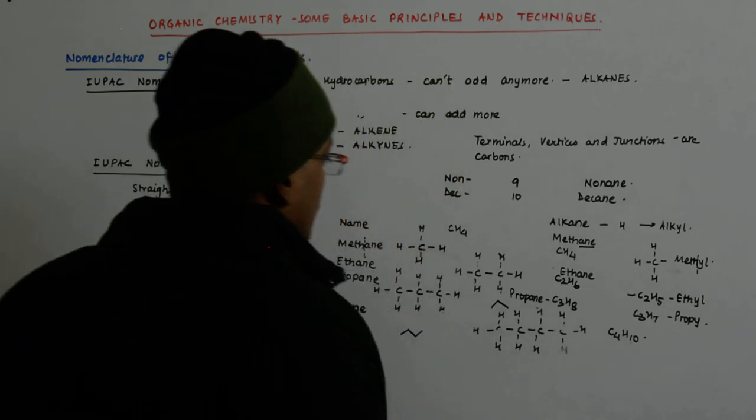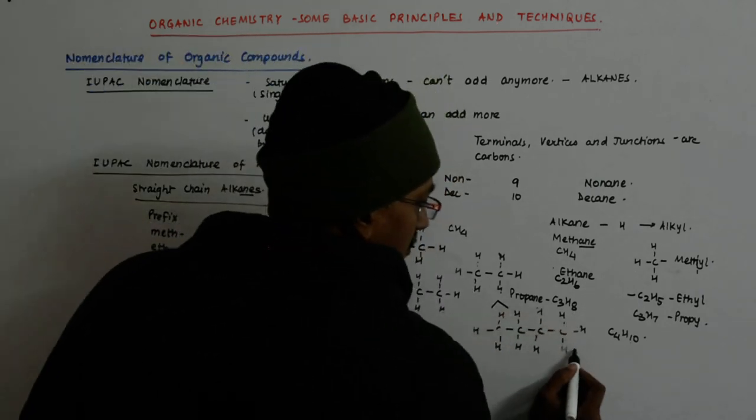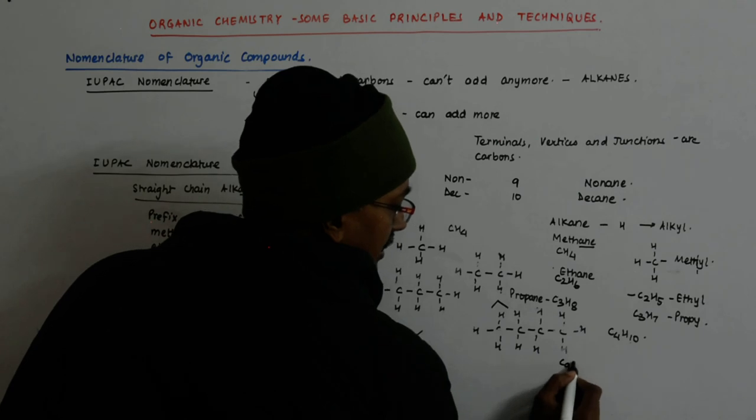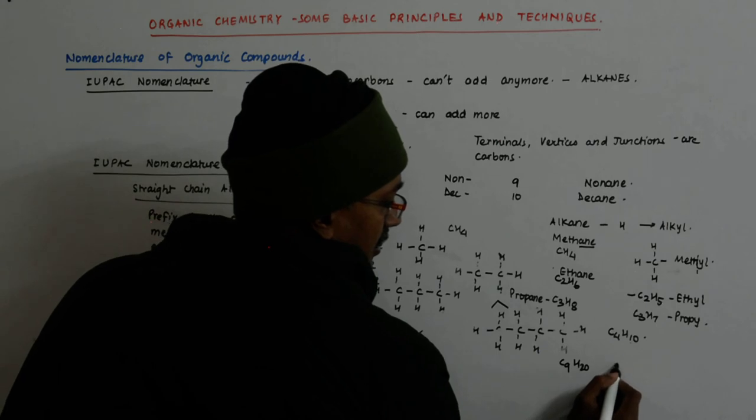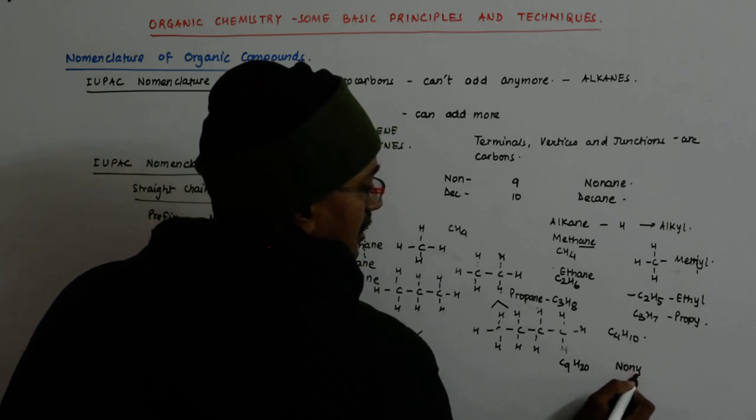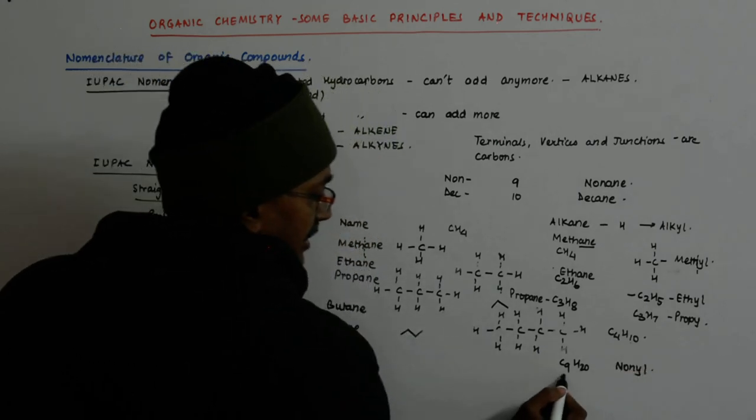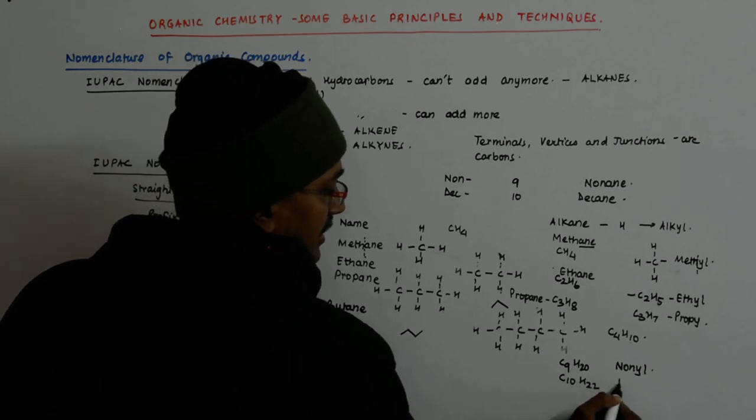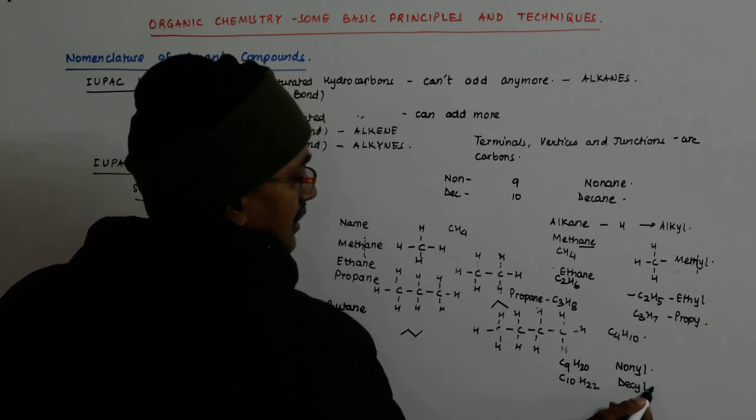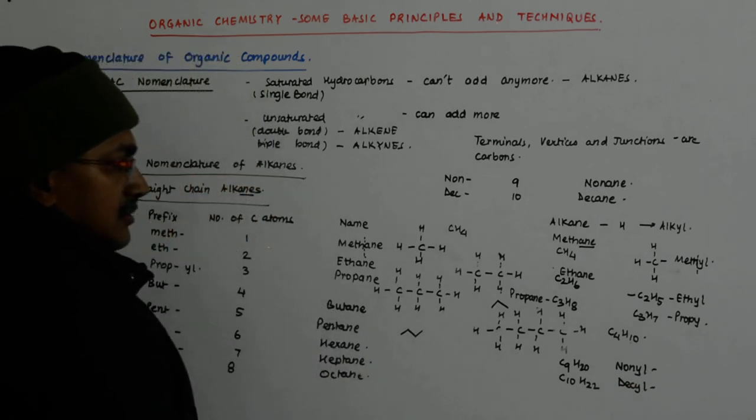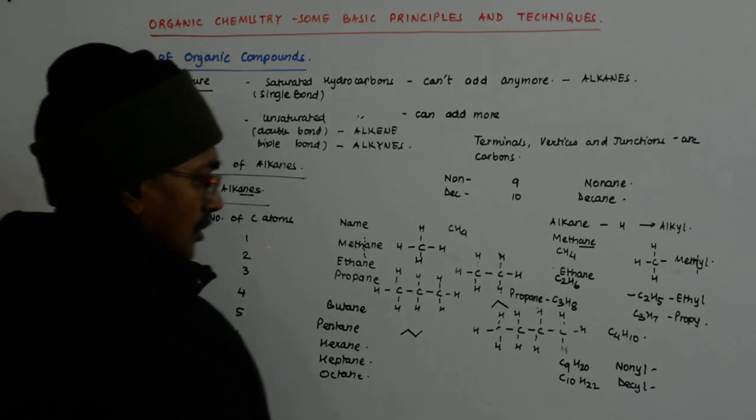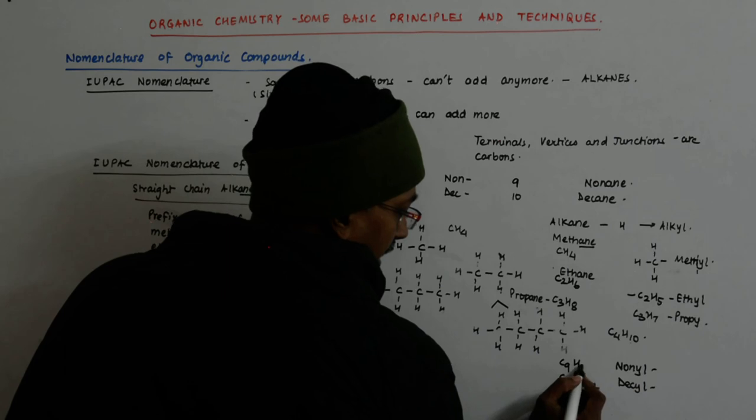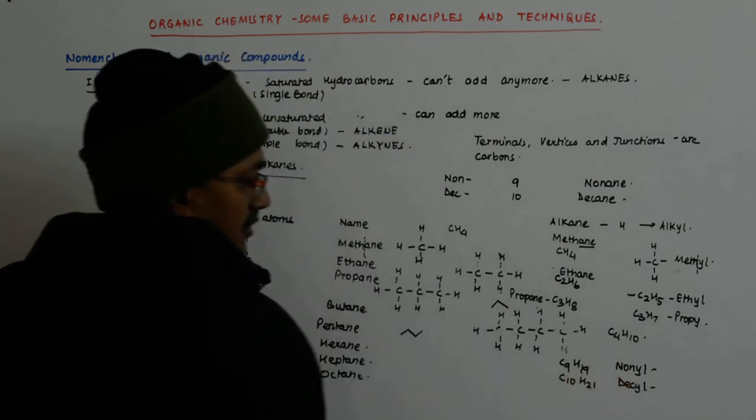So, nonyl. C9H19, it will be nonyl. And C10H21, it is decyl. This is 19 and this is 21.